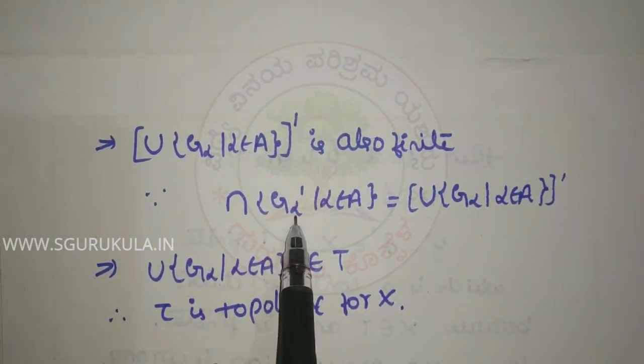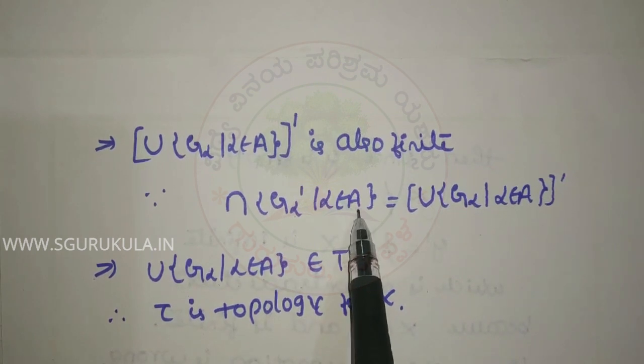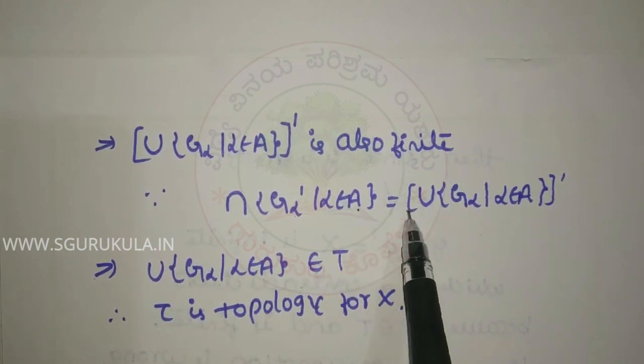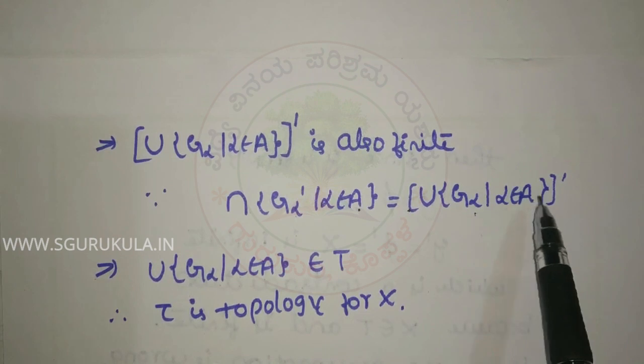The important note is: the complement of the union of G-alpha, such that alpha belongs to A, equals the intersection of G-alpha', such that alpha belongs to A. Since all four conditions are satisfied, T is a topology on X.